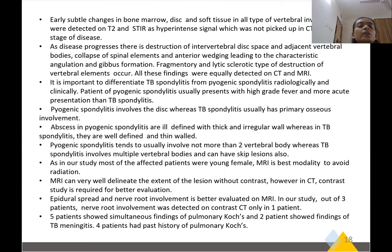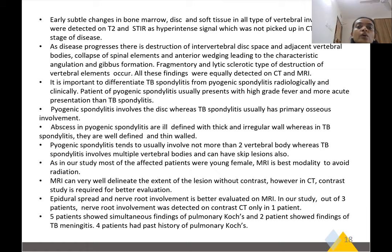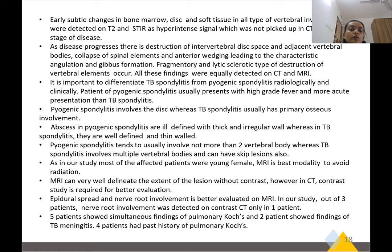The least common type is posterior involvement, spreading via the posterior external venous plexus of the vertebral veins. Early changes in the bone marrow and disc can be identified on T2 and STIR sequences, which are not picked up on CT. As disease progresses, there is destruction of the intervertebral disc space, adjacent vertebrae, spinal canal collapse, and anterior wedging leading to characteristic angulation and gibbus deformity. Fragmentary and lytic-sclerotic destruction of the vertebral elements occurs. It is important to differentiate TB spondylitis from pyogenic spondylitis: pyogenic involves the disc primarily, whereas TB has primary osseous involvement. Abscesses in pyogenic spondylitis have thick and irregular walls, whereas in TB they are thin-walled. Pyogenic spondylitis does not involve more than two vertebral bodies, whereas TB can involve multiple vertebral bodies with skip lesions.